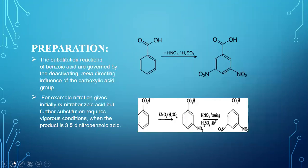Now, moving towards the preparation method of 3,5-Dinitrobenzoic Acid. It is prepared by the substitution reactions of benzoic acids. Substitution reactions are chemical reactions during which one functional group or atom is replaced by some other functional groups or atom.